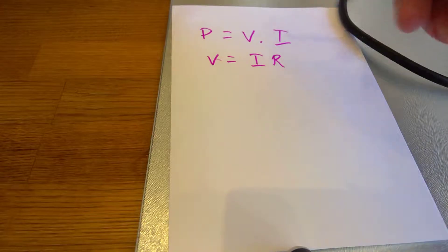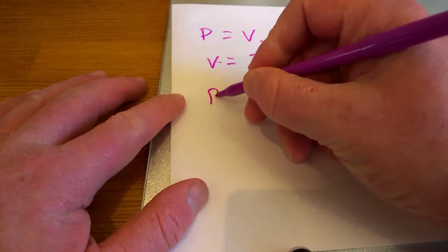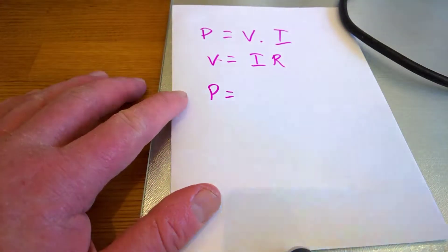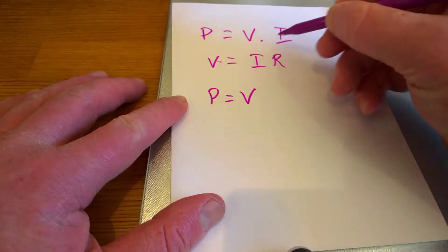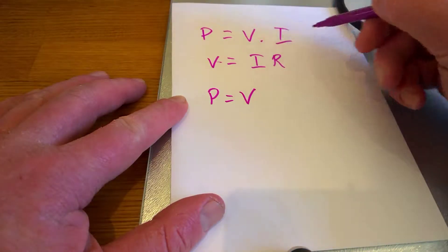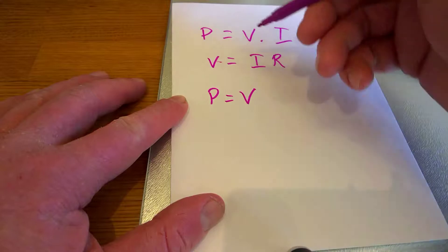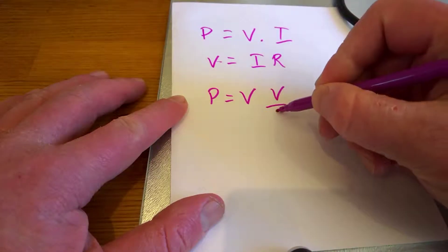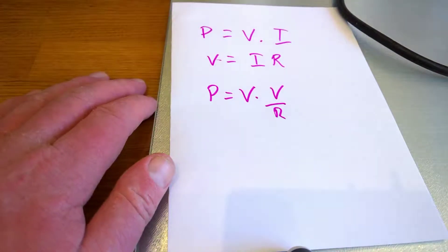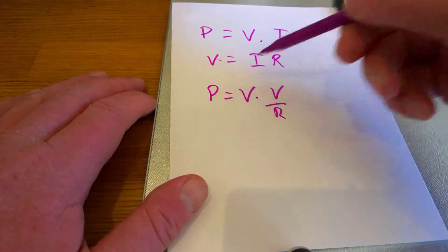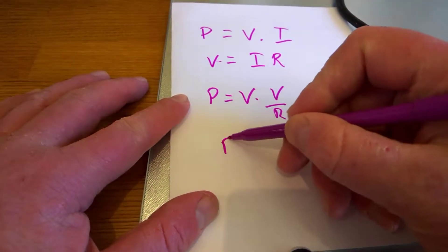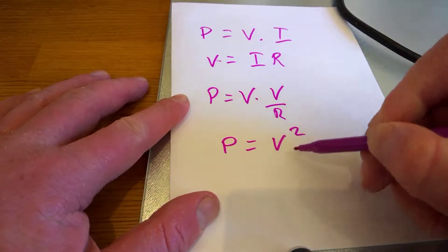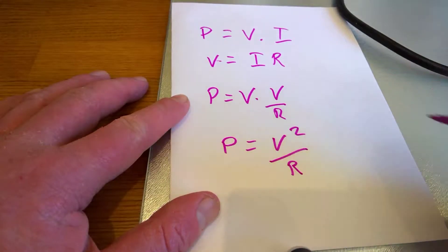But we can actually combine these together, so actually the power is voltage, and we will substitute this for our Ohm's Law. So the power is actually voltage squared, divided by the resistance.